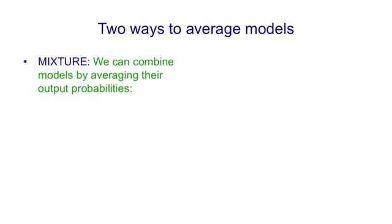I want to start by describing two different ways of combining the outputs of multiple models. In a mixture, we combine models by averaging their output probabilities. So if model A assigns probabilities of 0.3, 0.2, and 0.5 to three different answers,